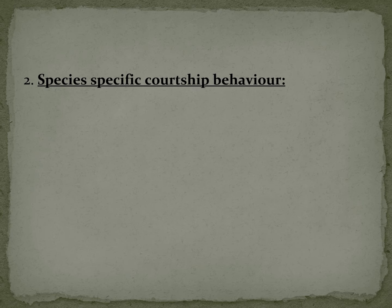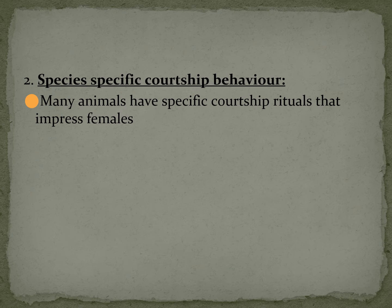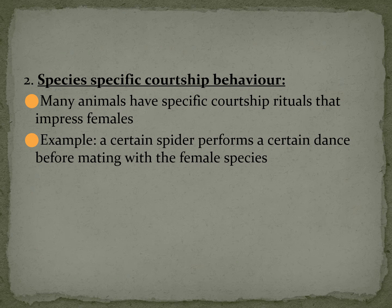The second reason why species may not be able to reproduce with one another is that they may not have the same courtship behavior. Many animals have specific courtship rituals that impress females, so if you don't know the specific courtship ritual, you won't be able to find and attract a mate. An example of this would be certain spiders that perform a dance before mating. A male spider of another species wouldn't be able to use the same courtship behavior to attract the female, so she wouldn't recognize him as a possible mate.